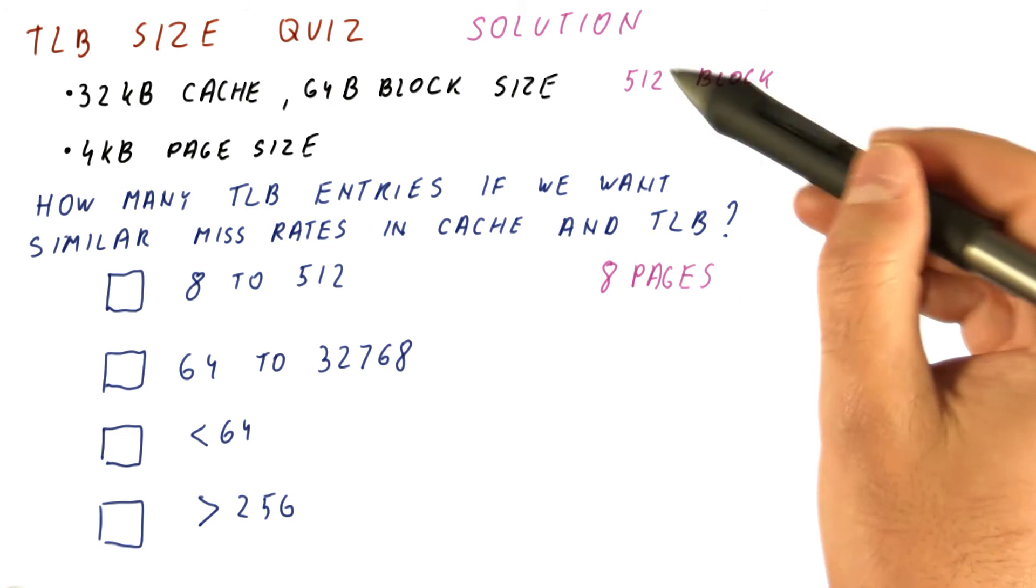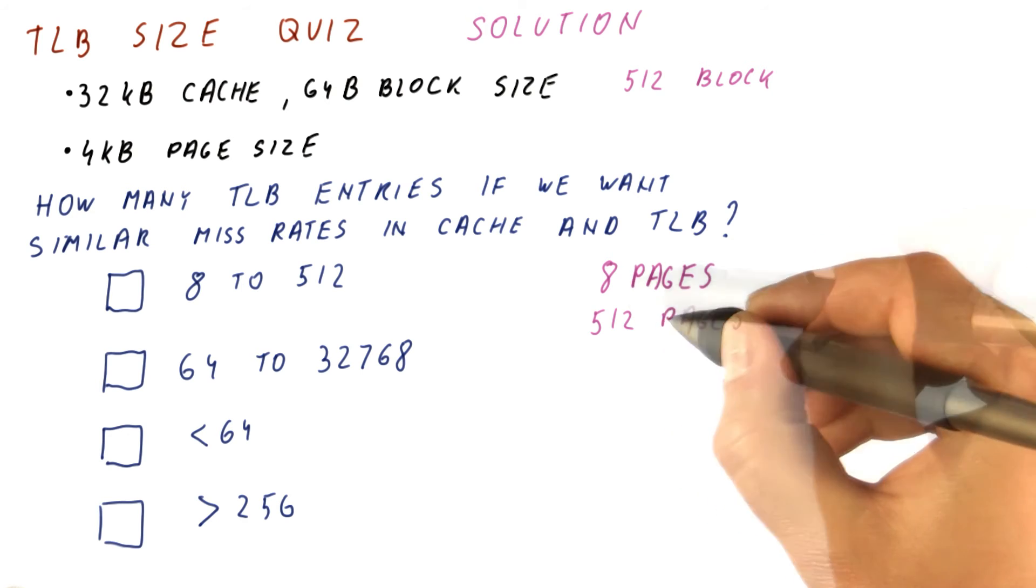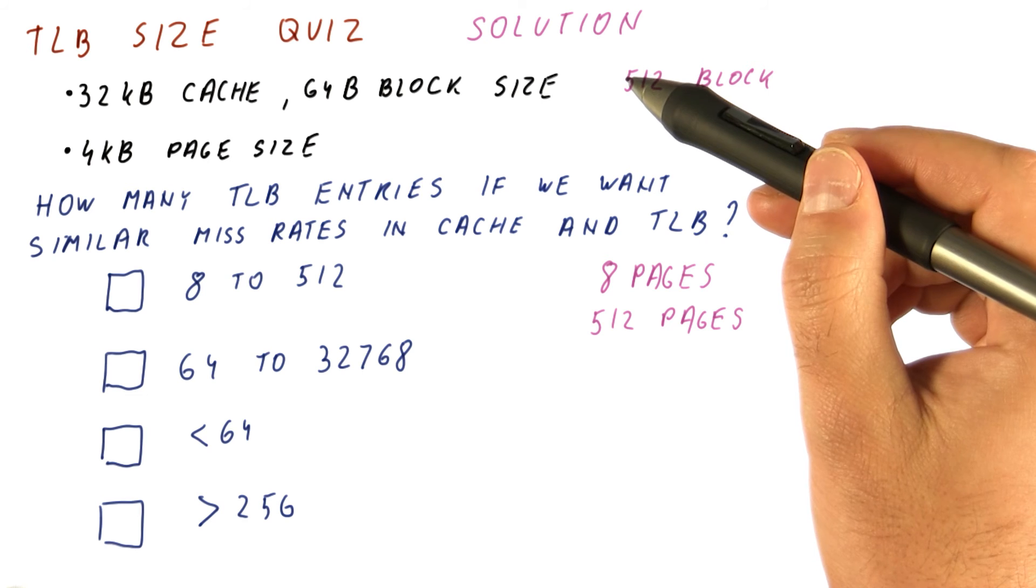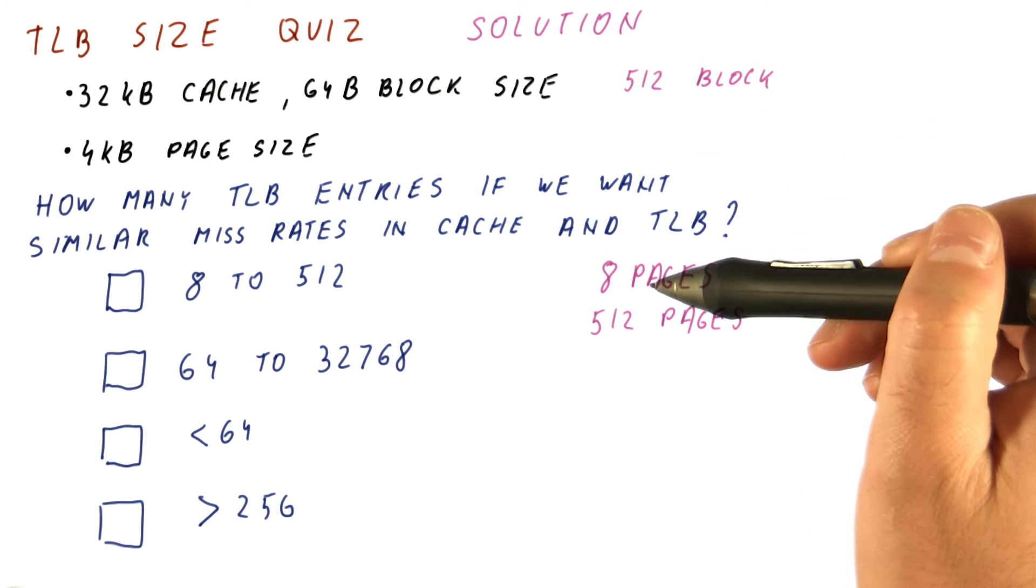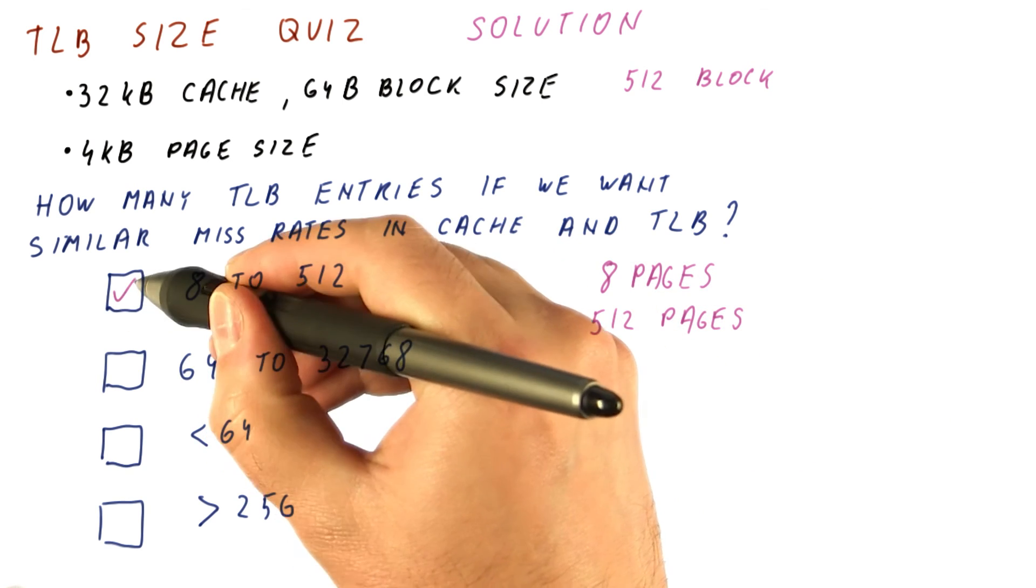So our TLB in this case needs to have up to 512 different pages in order to have hits for the same data that the cache does. In reality, the number of pages we need for the same hit rate will be somewhere in between these two. So this is the best answer.